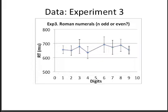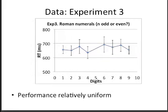Experiment 3 displayed Roman numerals for participants to judge whether it is odd or even. We can see that reaction time is relatively flat. There is a slight but not statistically significant trend that reaction time is longer for the larger than the smaller numbers. But for the most part, the odd or even representation appears to be uniform across all digits.